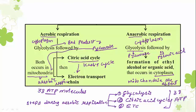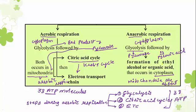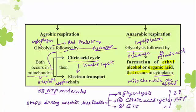Mitochondria is concerned only with aerobic respiration. In anaerobic respiration, mitochondria are not necessary. The pyruvate may be converted into ethyl alcohol — alcoholic fermentation — or it may be converted into organic acid — lactic acid fermentation.